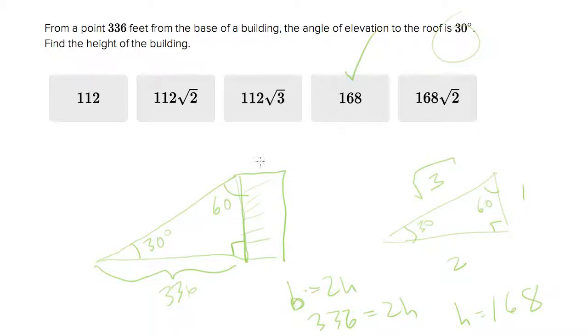You could also use basic trig here. So, you could use the tangent of 30 equals the height over the base. So, you could do it that way if you wanted. Also, you'd need to use your calculator. But this is faster if you just have the ratios memorized.